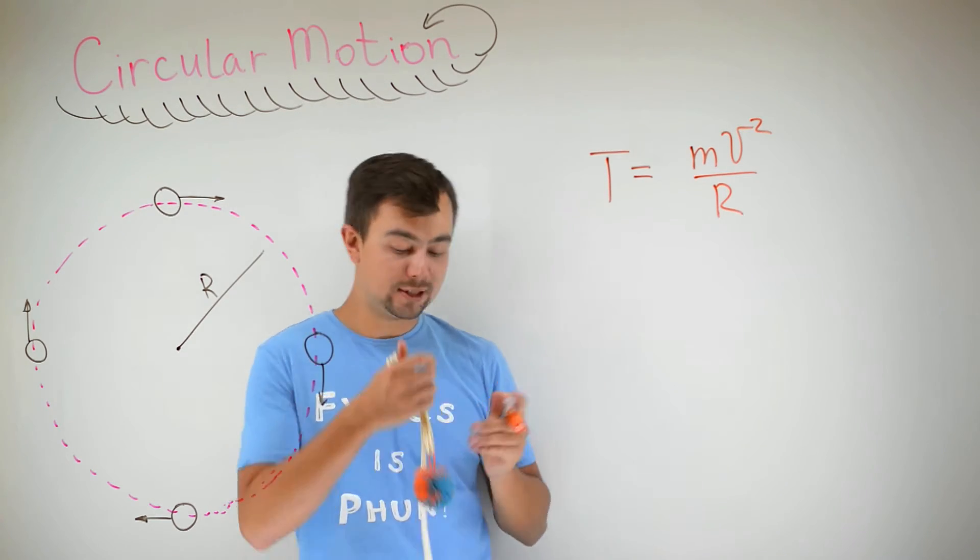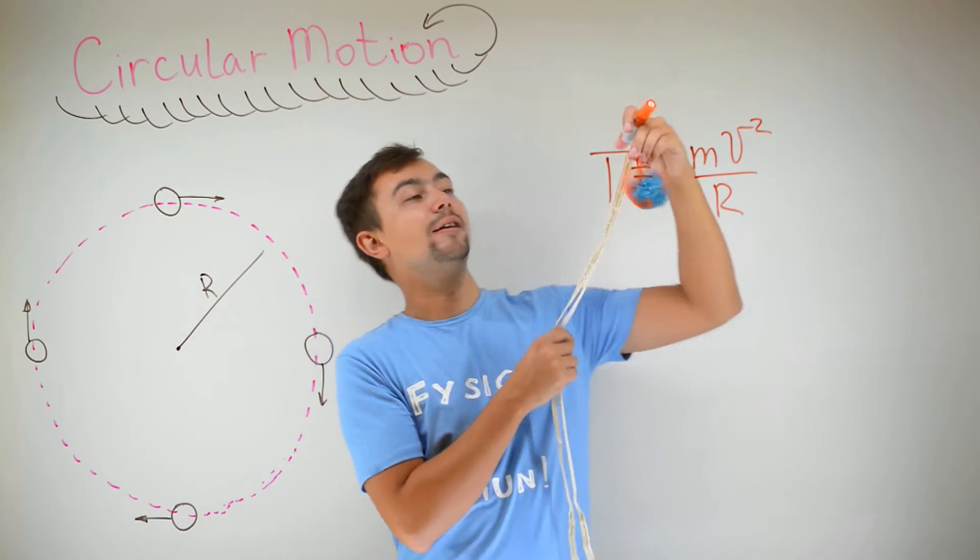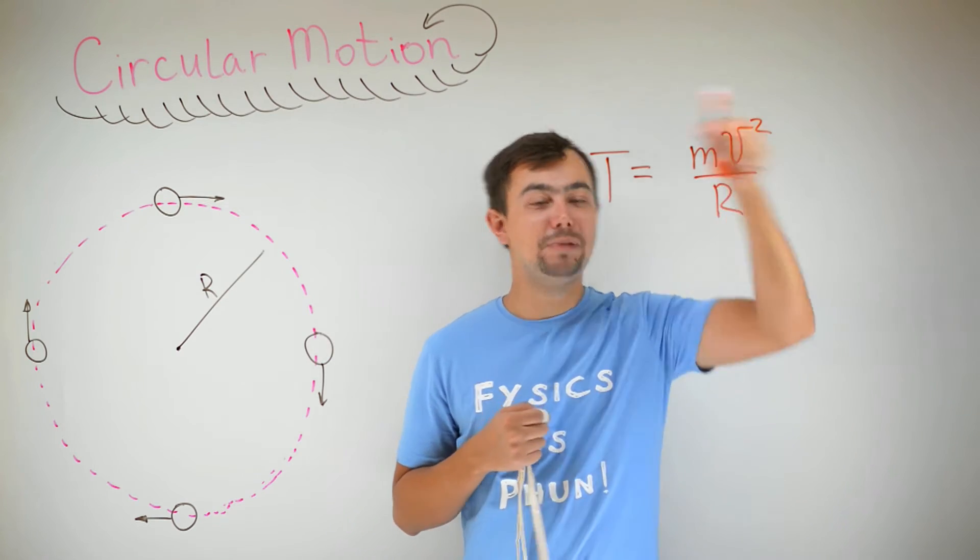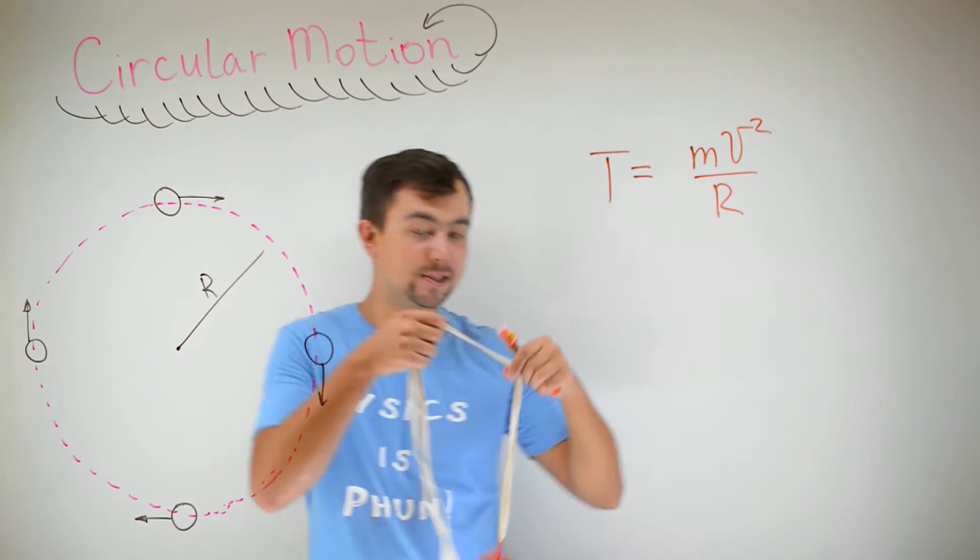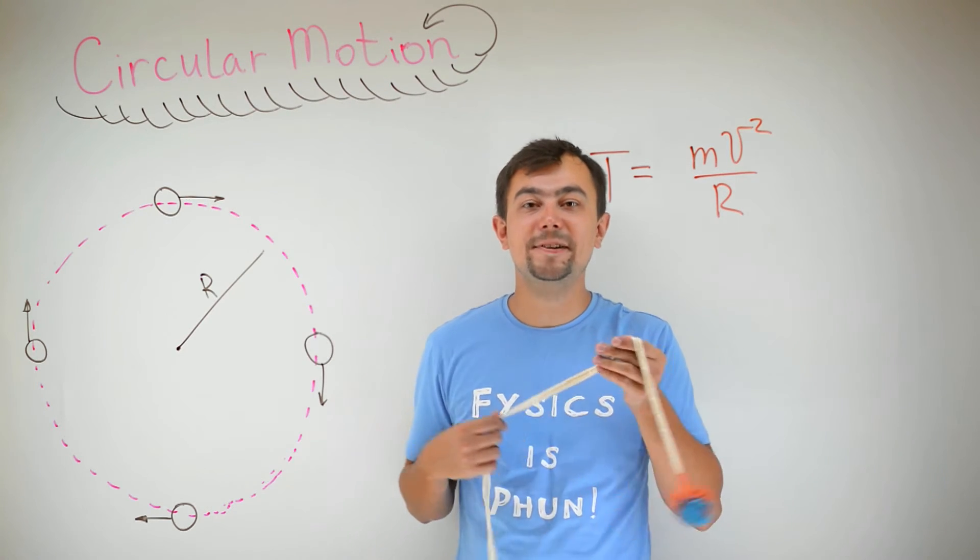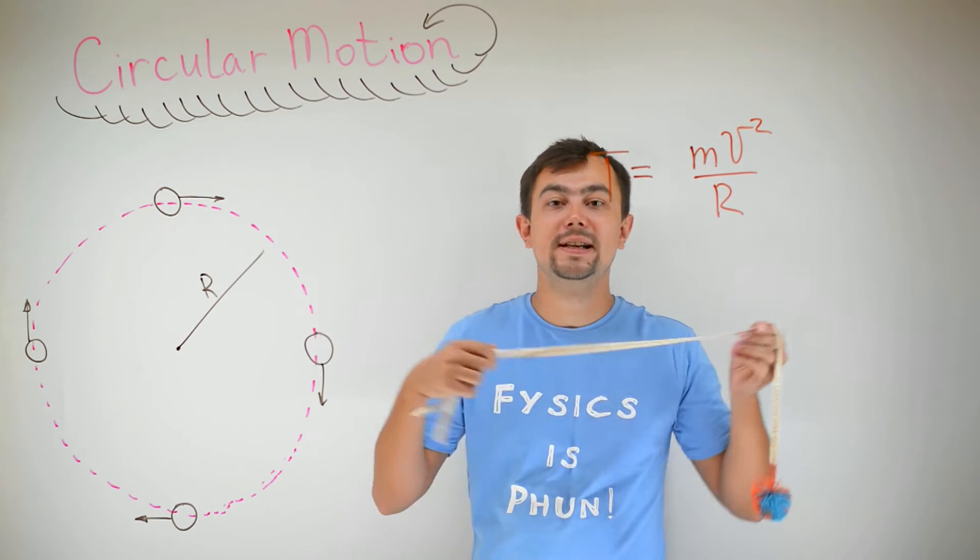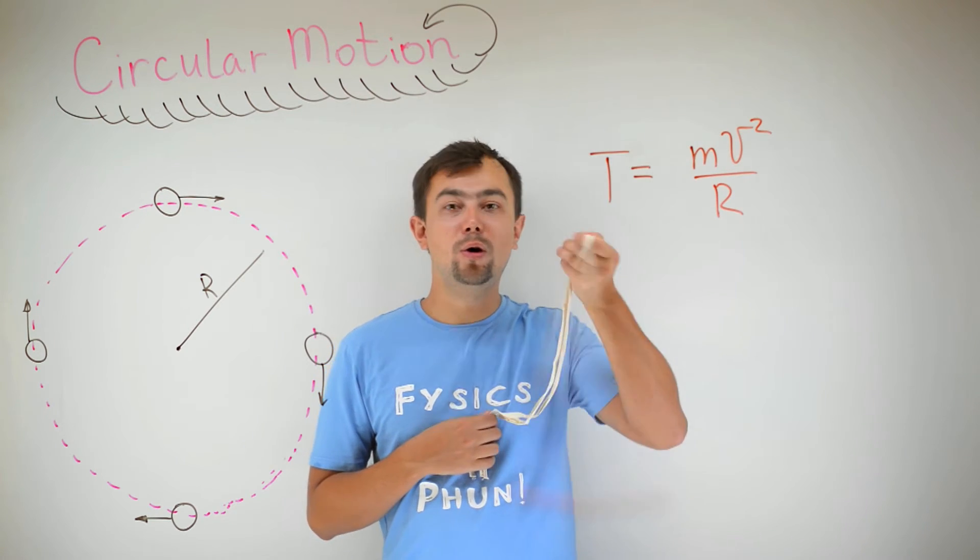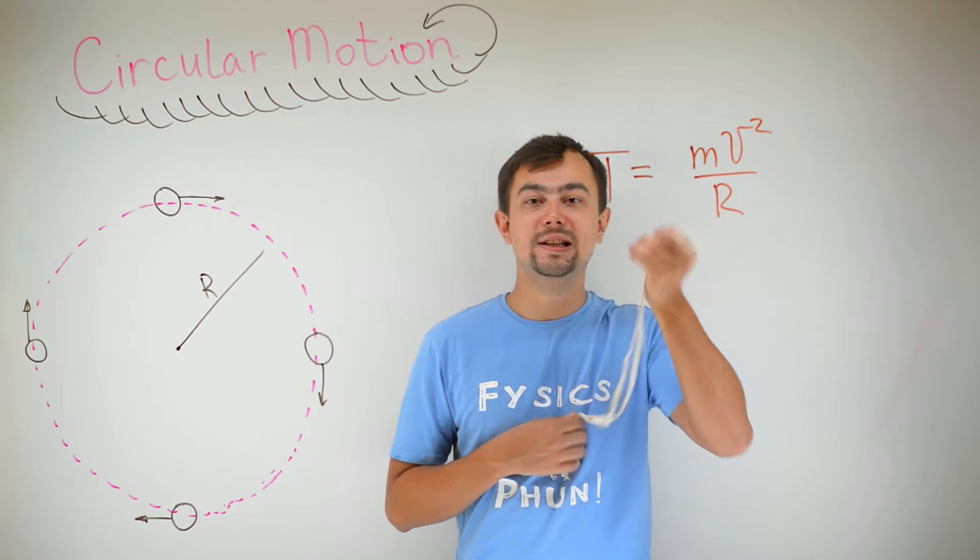Where m is the mass of this thing, v is the speed, and r is the radius or the length of the rope. In this example, if I stop applying a force, that is, if I let go, the ball will move in a straight line.